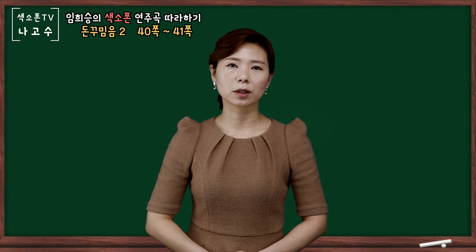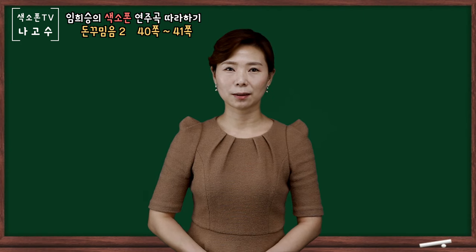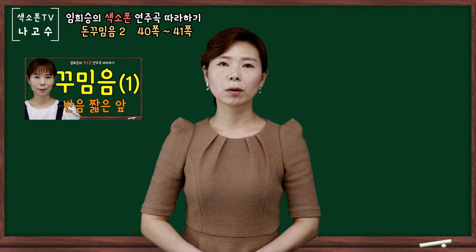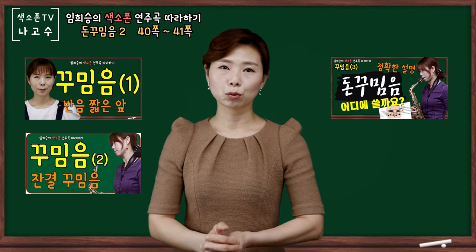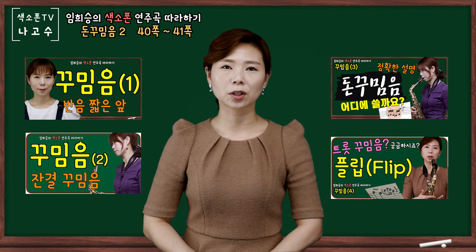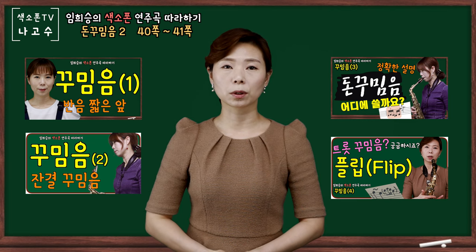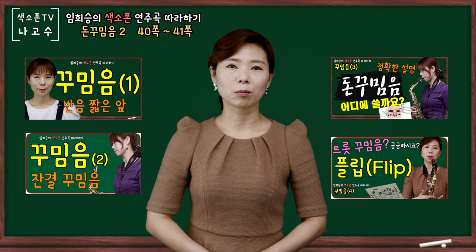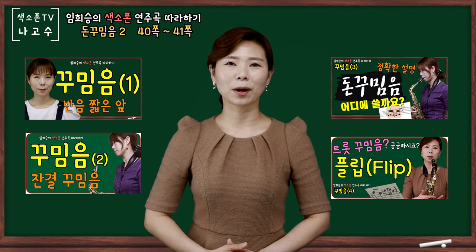좀 더 자세한 설명을 원하신다면 돈 꾸밈음 첫 번째 영상을 참고하셔서 보시길 바라겠습니다. 이렇게 저와 같이 다섯 가지 형태의 꾸밈음을 쭉 살펴보았습니다. 첫 번째 반음 짧은 앞 꾸밈음, 두 번째 잔결 꾸밈음, 세 번째 돈 꾸밈음, 네 번째 플립 꾸밈음, 다섯 번째 돈 꾸밈음의 두 번째 형태까지 살펴보았습니다. 다섯 가지의 꾸밈음을 충분히 연습해 놓는다면 곡의 꾸밈음을 사용하기에 불편함은 없으실 겁니다. 꾸준하게 연습하셔서 자연스러운 꾸밈음을 표현하시길 바라겠습니다.